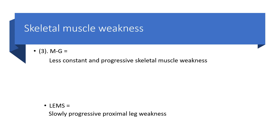When it comes to skeletal muscle weakness, in myasthenia gravis we'll be dealing with less constant and progressive skeletal muscle weakness. But in Lambert-Eaton myasthenic syndrome, it will be slowly progressive and it is going to be proximal leg weakness.